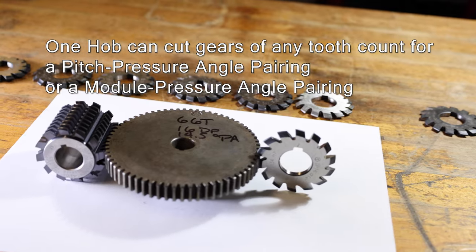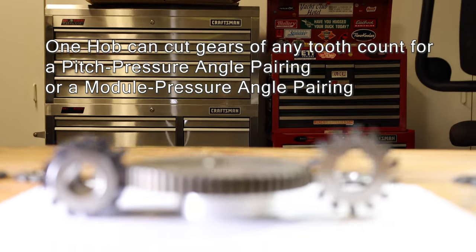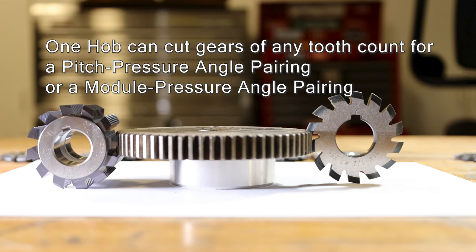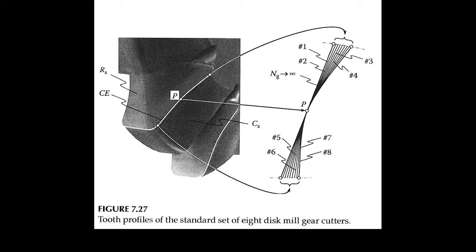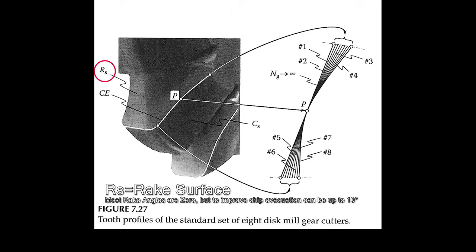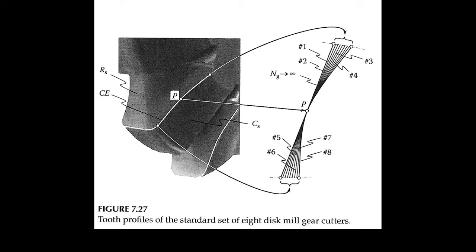One hob can do the work of all eight gear cutters, essentially. The hob uses a generating motion on a hobbing machine to cut a lot of different tooth counts. It also has minimums and maximums but can cut everything in between. This is a neat diagram from Radzevich showing the profile and all the little lines of what all the other disc cutters would look like. Here's the rake surface — that's what's going to be coming into contact with your metal as you cut your gear — and the cutting edge is shown with a white highlight.